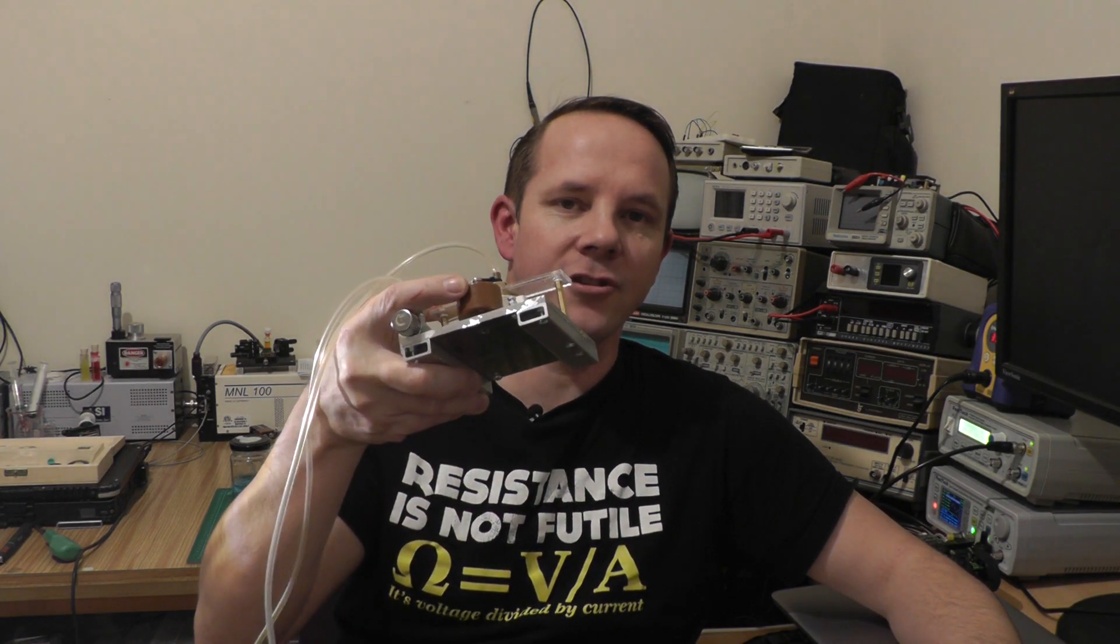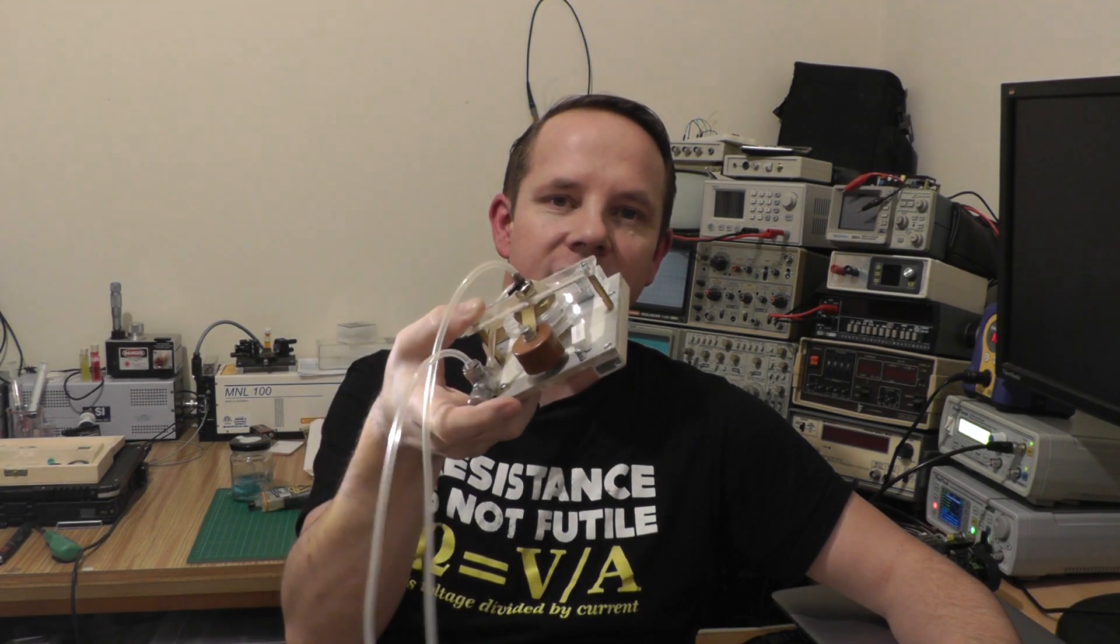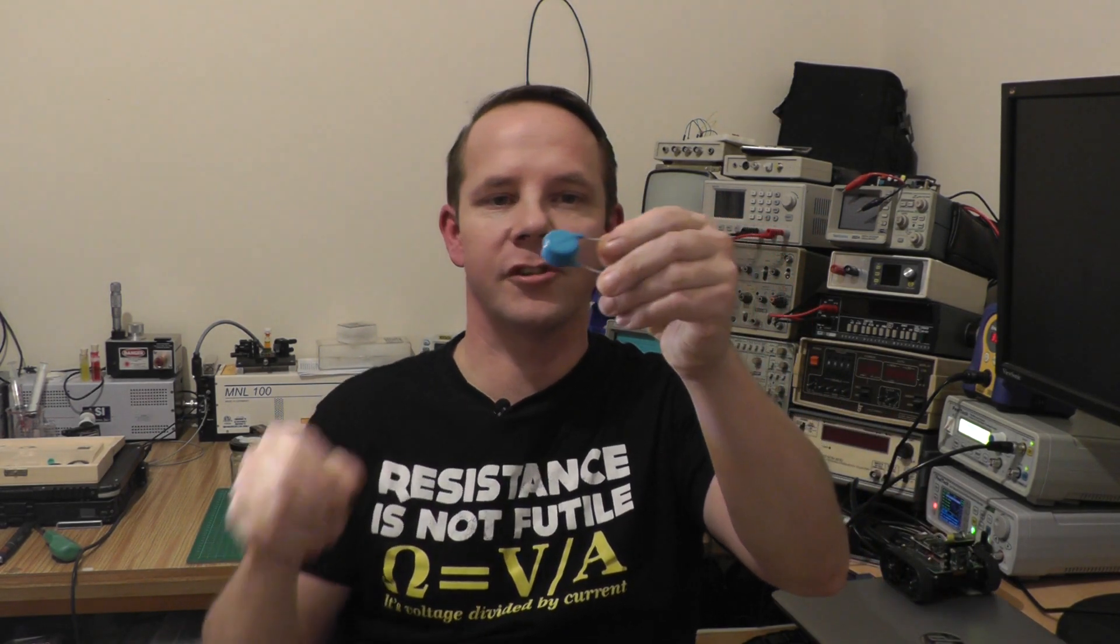Hi and welcome back to Lezzy's Lab. In a previous episode we replaced the high voltage doorknob capacitor in this homemade miniature TEA nitrogen laser with a wire ended high voltage capacitor.